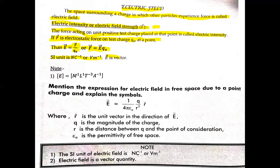E is a vector — vector E is a vector quantity which has both magnitude and also direction. So what is an electric field? It is the space surrounding a charge in which other particles will experience some force because of the existing charge. That itself is called as electric field.